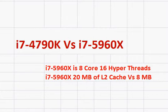The major difference between them is the number of cores and hyperthreads. The i7-5960X has 8 cores while the 4790K has only 4 cores. Both support hyperthreading, giving us 16 hyperthreads versus 8 hyperthreads. We also have a huge 20 MB of L3 cache versus 8 MB in the 5960X versus the 4790K.